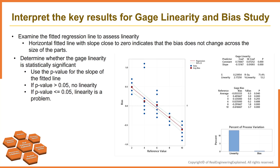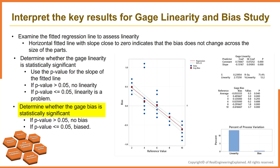You cannot assess the overall bias when significant linearity is present, because the biases at different reference values are different. Finally, determine whether the gauge bias is statistically significant. Ideally, the bias value is close to 0. A positive bias indicates that the gauge measures high, and a negative bias indicates that the gauge measures low. For a gauge that measures accurately, the percent bias value is also small.